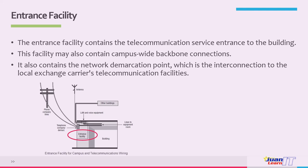The entrance facility serves both public and private network service cables, including wireless, from the entrance point to the building continuing to the entrance room or space. The demarcation point is typically 12 inches from where the carrier's facilities enter the building, though the carrier may designate otherwise.